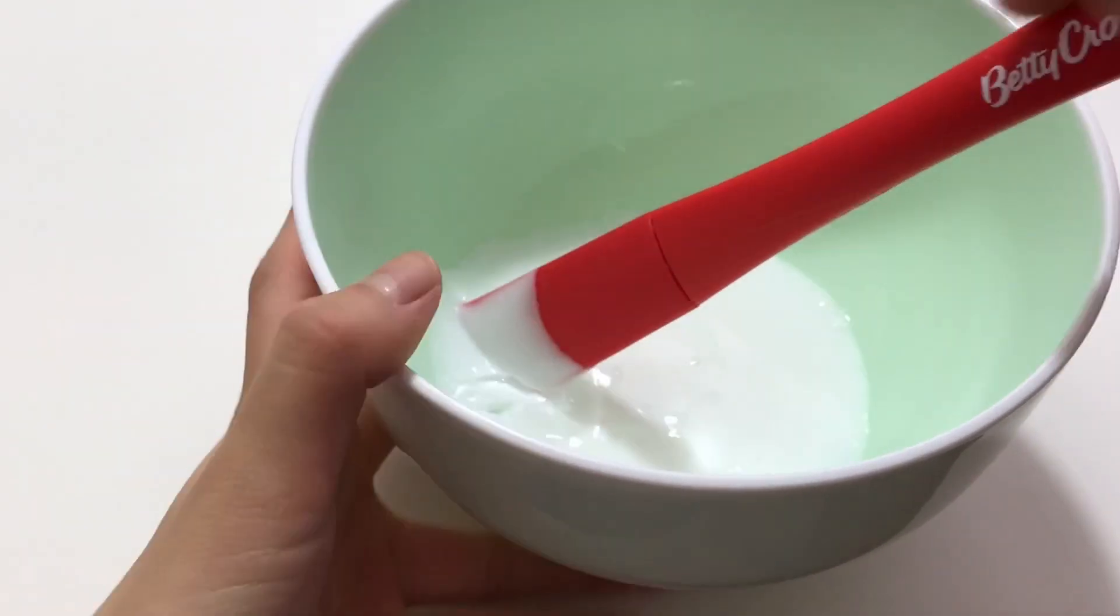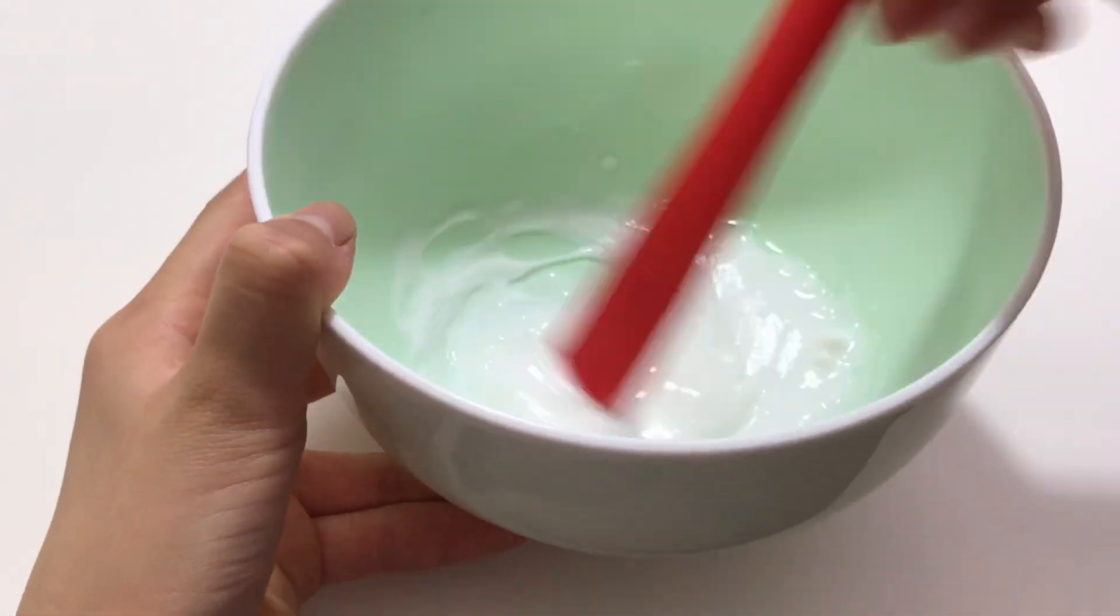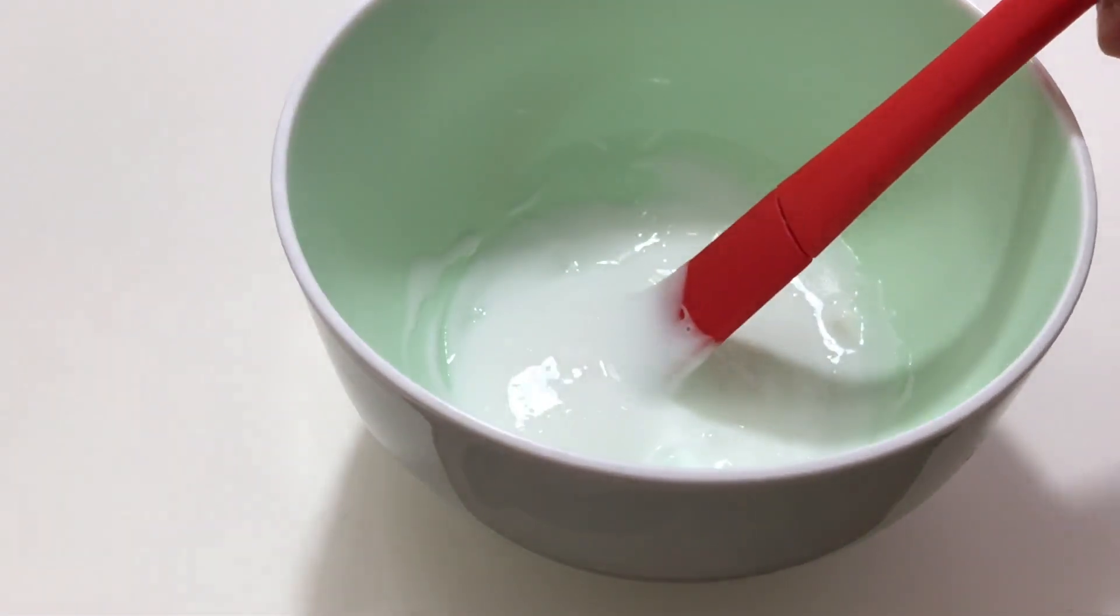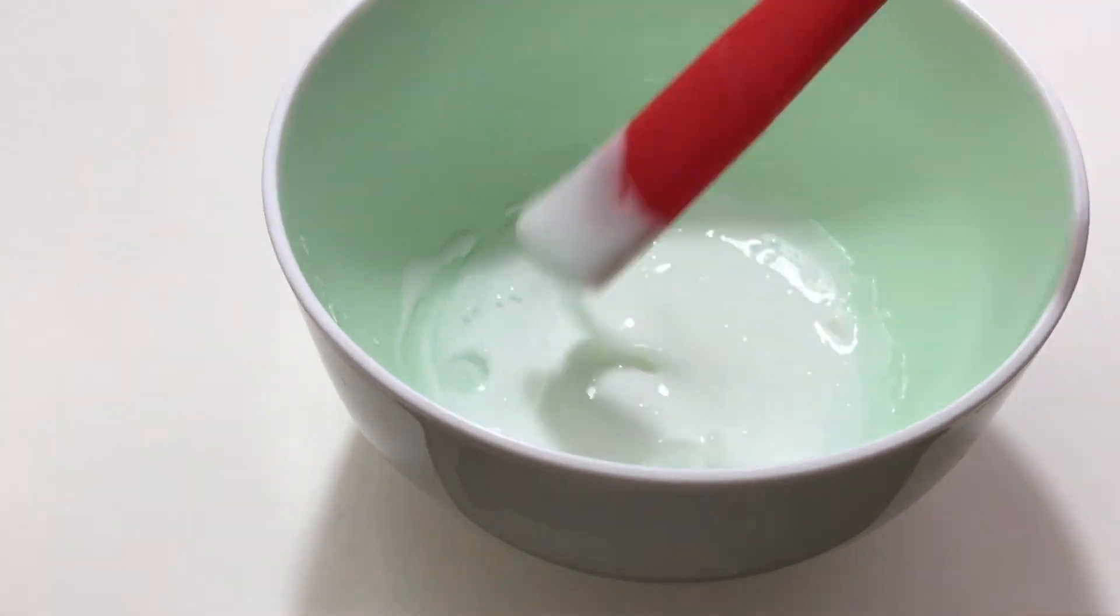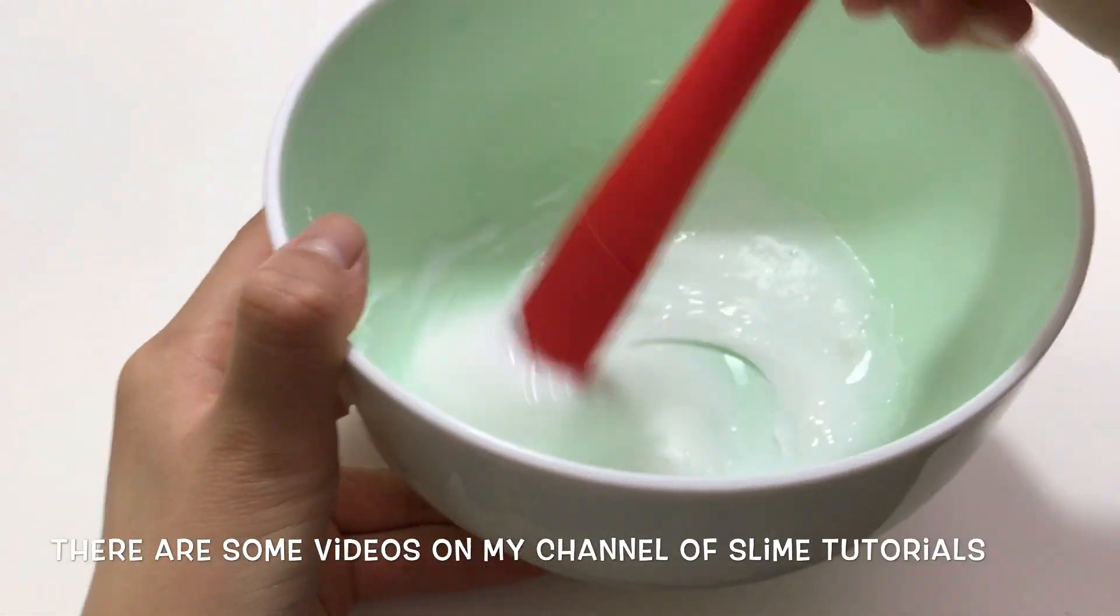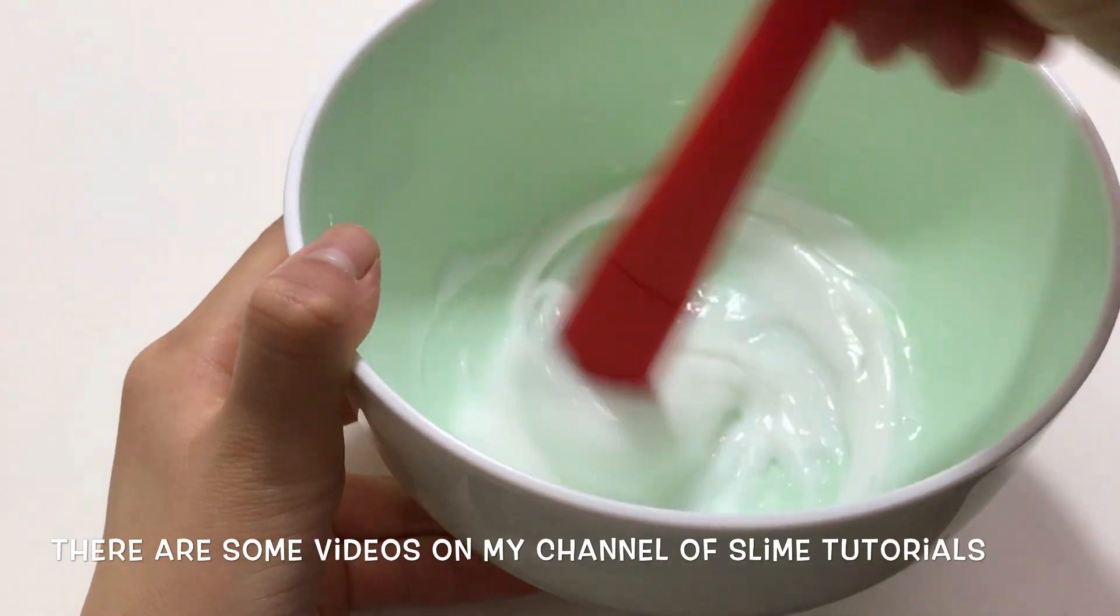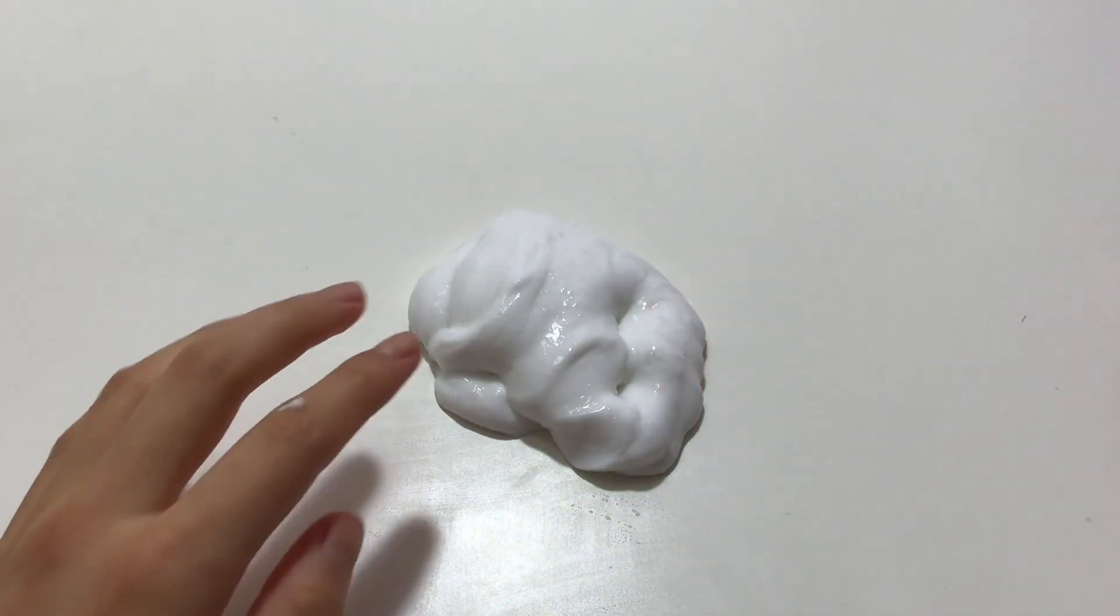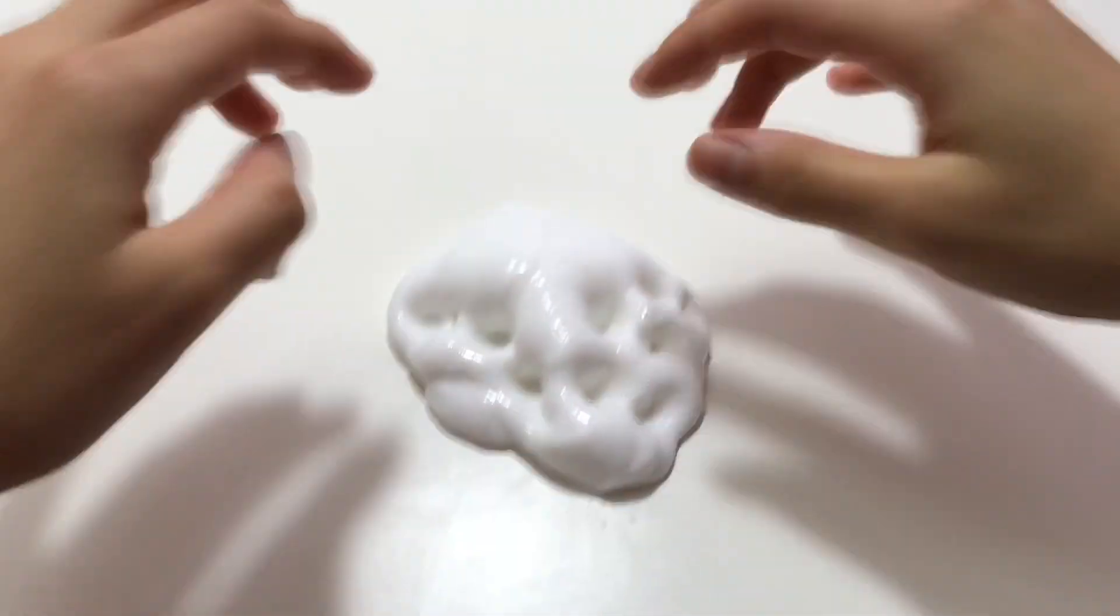And after this you will add some activator. Personally I use one cup of warm water mixed with half a teaspoon of borax. Some people use one teaspoon of borax but I feel like half a teaspoon just allows you to have more control so you don't over activate your slime. But you can also use some other options. All right, I am done making a small batch of slime.